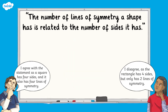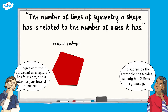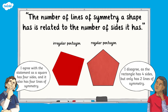Let's explore the statement by comparing two shapes. Here is an irregular pentagon. It has five sides, but at least one side or angle is different from the others, so it is irregular. This particular irregular pentagon has zero lines of symmetry, so the number of lines of symmetry does not match the number of sides it has. Here's a regular pentagon — all of its five sides and angles are equal. When we draw in the lines of symmetry, we can show that it has five lines of symmetry, which does match the number of sides.